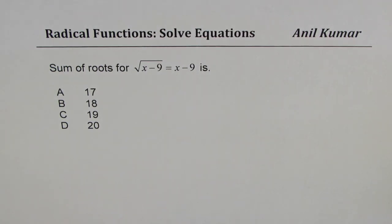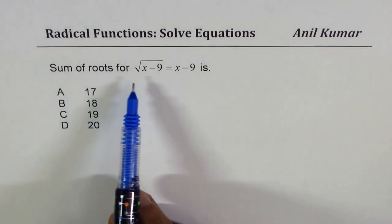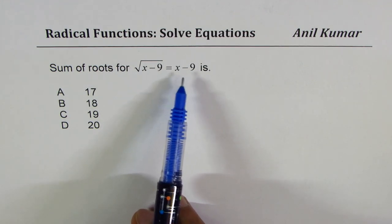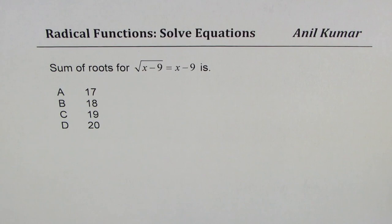I'm Anil Kumar sharing with you a very important question on radical functions. The question here is: sum of roots for square root of x minus 9 equals x minus 9 is 17, 18, 19, or 20.